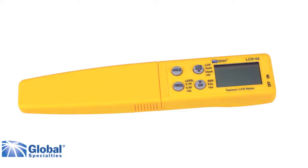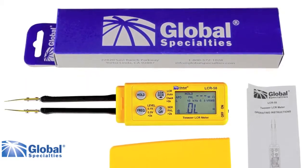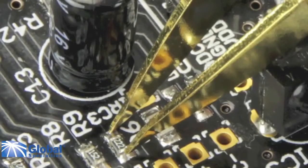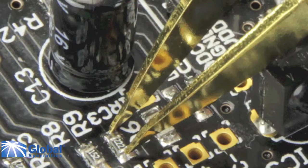Here we have the LCR58 Tweezer LCR Meter from Global Specialties. This is a very compact LCR that's small enough to carry in your pocket and perfect for use on small components.